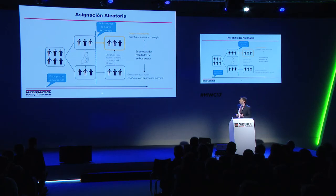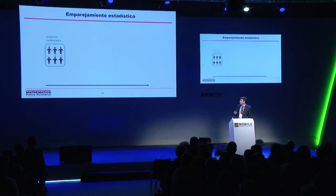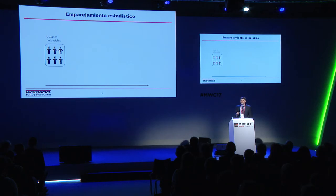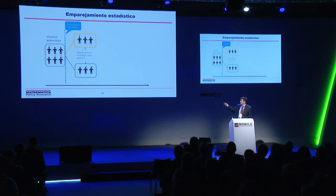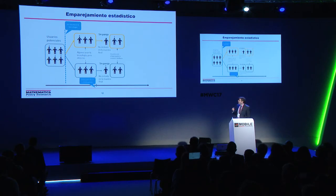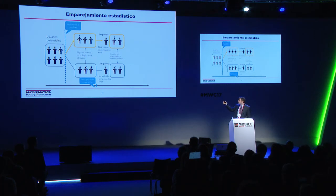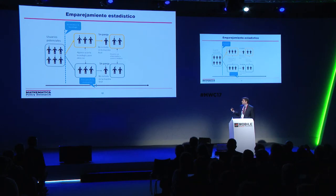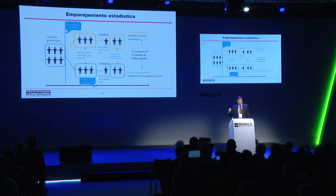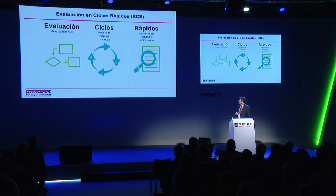The other type is statistical pairing. Here we have a group of potential users, and when the technology is introduced, some choose to use it and others don't. We begin the evaluation after the technology has been introduced and use statistical methods to form groups as similar as possible. There are statistical methods that can show how similar those groups really are, and by comparing them we can see what the effect of the technology is — whether on academic, non-academic achievement, or other factors.